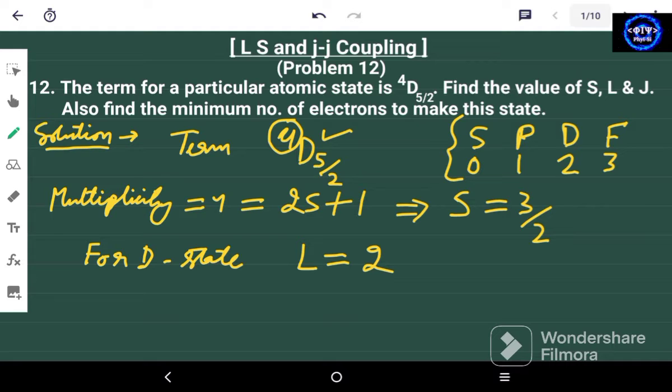What is the value of capital J? Now usually we used to find the value of J using the rule of L plus S to L minus S. But in this case, it's already been given in the term itself and it is actually 5/2.